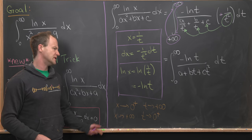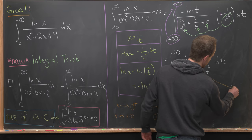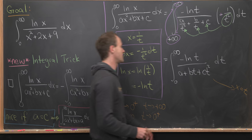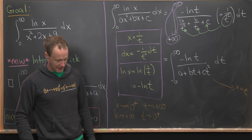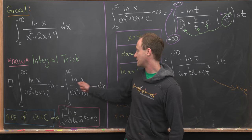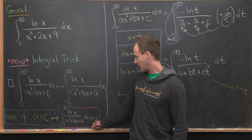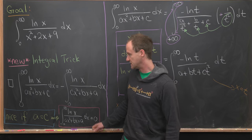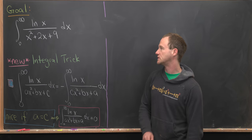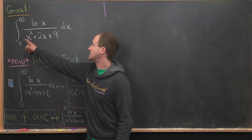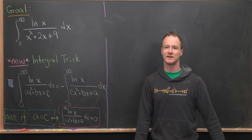All that remains is to substitute back to x, rename t as x, bring out the minus sign, and reorder the denominator — giving exactly the stated formula. And as discussed, if c equals a, the integral must equal zero. Now we're ready for the main goal: the integral from zero to infinity of ln(x) over x²+2x+9.